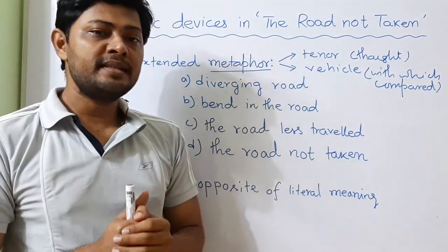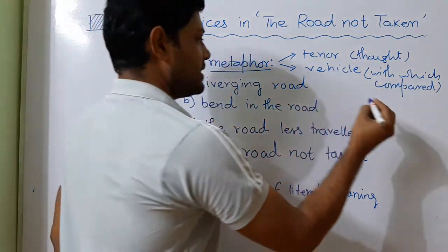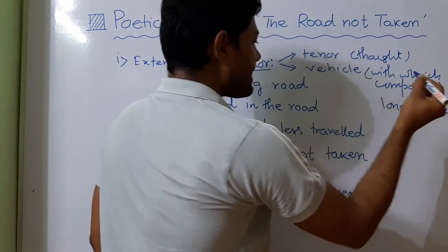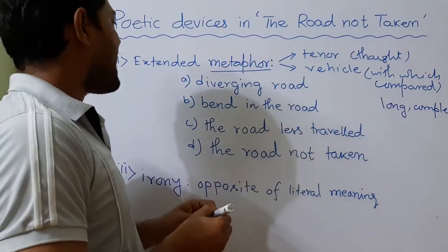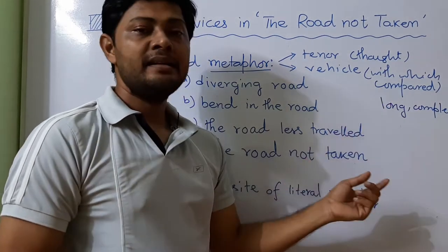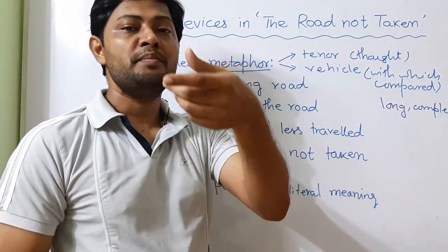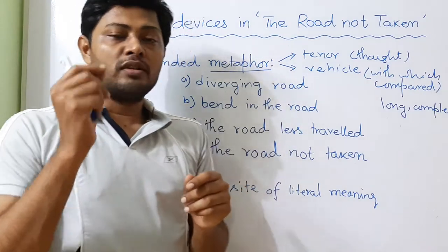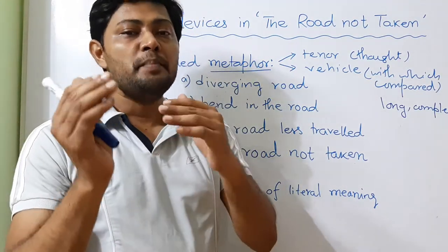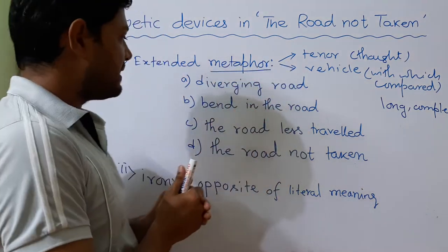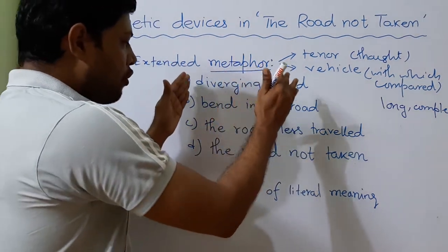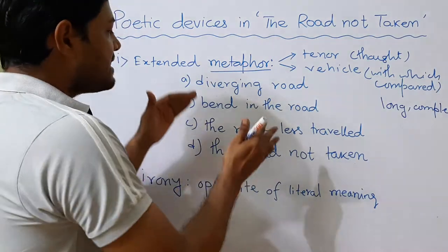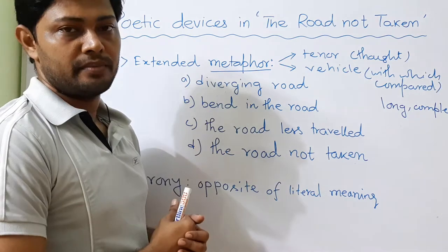Now what is extended metaphor? Extended metaphor means a long and complex metaphor. Often in an extended metaphor there are more than one metaphors. So an extended metaphor is consisted of many metaphors. In this poem there are four small metaphors, or we can say four symbols, and the whole poem is an extended metaphor.